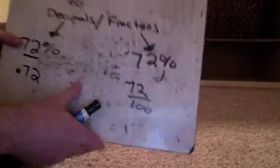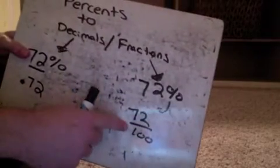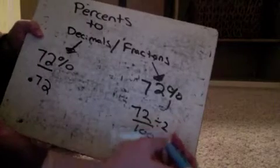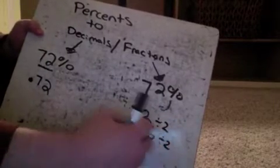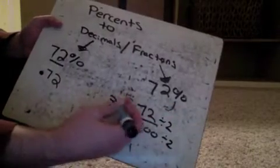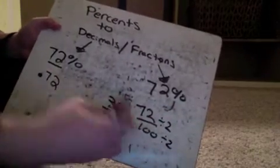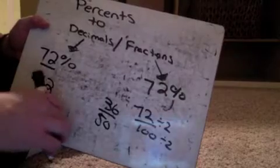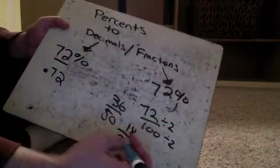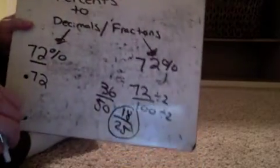Now, when you're changing them to fractions, you probably want to reduce. So to reduce, I'd probably divide this by 2. And if I divide 72 by 2, I believe that would be 36 50ths. And then if I divide that by 2, I think it would be 18 25ths would probably be our final answer to that one.